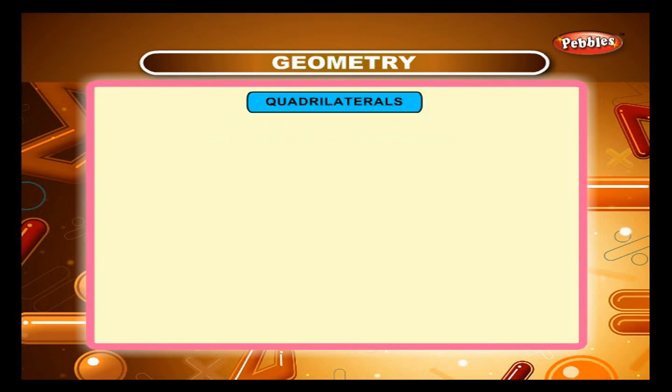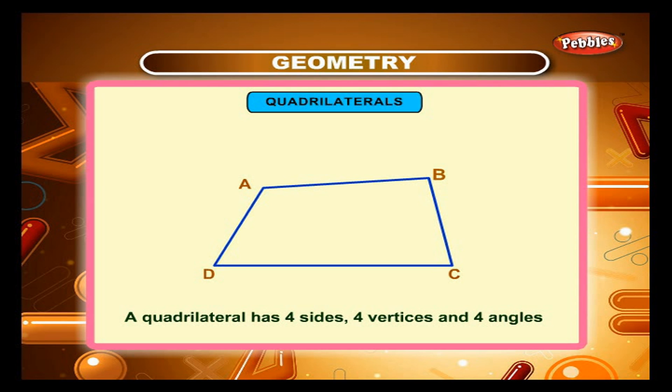Quadrilaterals. Look at this figure. It is formed by four line segments. It is called a quadrilateral. The four line segments are the four sides of the quadrilateral. A quadrilateral has four sides, four vertices and four angles.